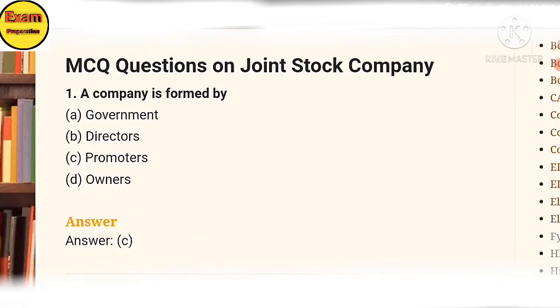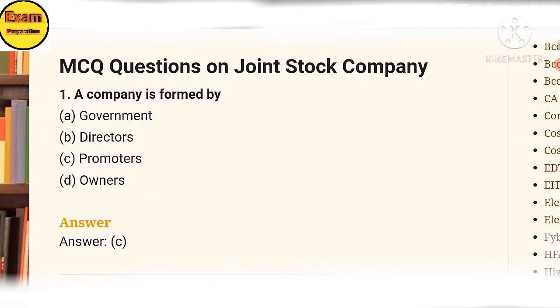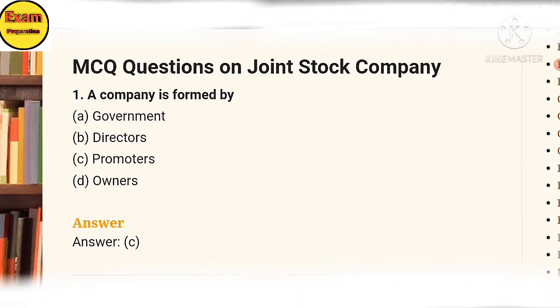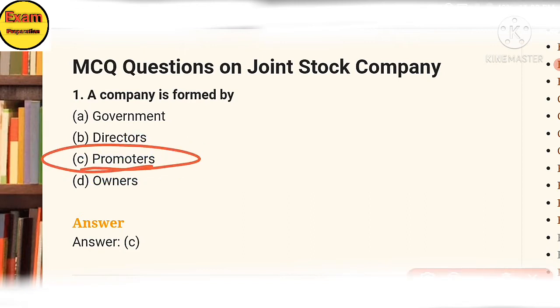First question: a company is formed by — (a) government, (b) director, (c) promoter. The answer is option C: promoters.